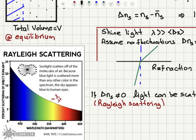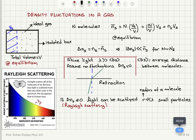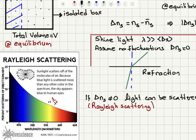The intensity is proportional to 1 over lambda to the fourth power. In the visible spectrum between 400 and 700 nanometers, we will have the highest scattered intensity in the bluish-violet portion of the spectrum because of the 1 over lambda to the fourth dependence. So when you look at the sky, you will see mostly scattered light which has bluish-violet content, but our eyes are mostly sensitive to the blue portion of the spectrum, and there is not too much violet content at the end of the visible spectrum anyway.